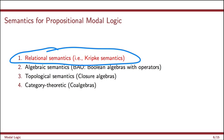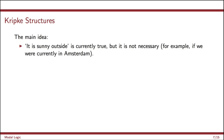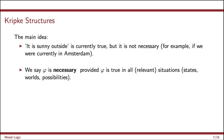What exactly do I mean by a Kripke structure? Or rather than Kripke structure, sometimes you'll call this a relational structure. So a Kripke structure or a relational structure. So the main idea is, let's say it is sunny outside, is currently true. Let's suppose that it actually is sunny outside. But that's not necessary, for example, if we lived in Amsterdam. It's typically not sunny in Amsterdam, so it's certainly not necessary that it's sunny outside if we lived in Amsterdam. So we say that phi is necessary, provided that phi is true in all of the relevant situations or, as we'll say, states or possible worlds.